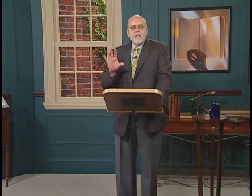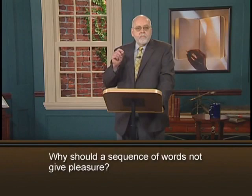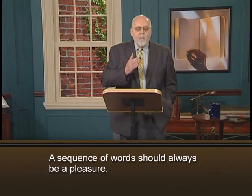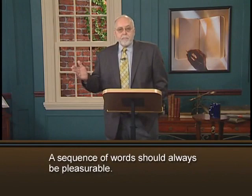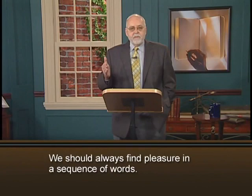What in point of fact does this seemingly simple sequence of words actually mean? How does it actually work? In so far as we think we understand what Stein meant, what are some of the ways she could have gotten that meaning across with different sentences? Just think of a few of the many different ways she might have written it: "Why should a sequence of words not be a pleasure?" "Why should a sequence of words not give pleasure?" "Shouldn't a sequence of words always give pleasure?" "A sequence of words should always be a pleasure." "A sequence of words should always be pleasurable." "Words in sequence should always give pleasure." "We should always find pleasure in a sequence of words." And so on and on.